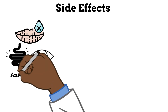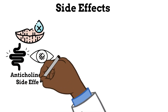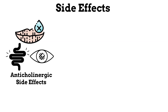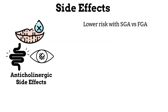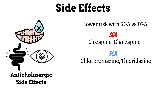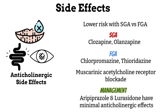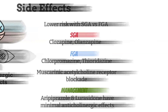Next, anticholinergic side effects like dry mouth, constipation, and blurry vision. This is seen with both classes and generally with lower incidence with second generation agents. But within second generation antipsychotics, the anticholinergic effects are more prominent with clozapine and olanzapine. For first generation antipsychotics, it's more common with chlorpromazine and thioridazine. For both classes, the mechanism is due to blockade of the muscarinic acetylcholine receptors.